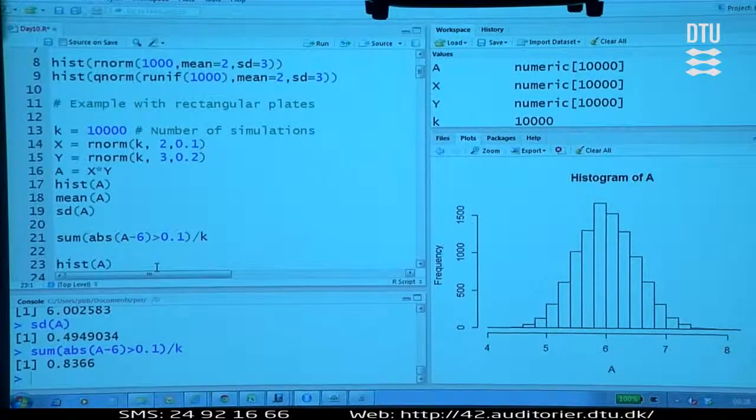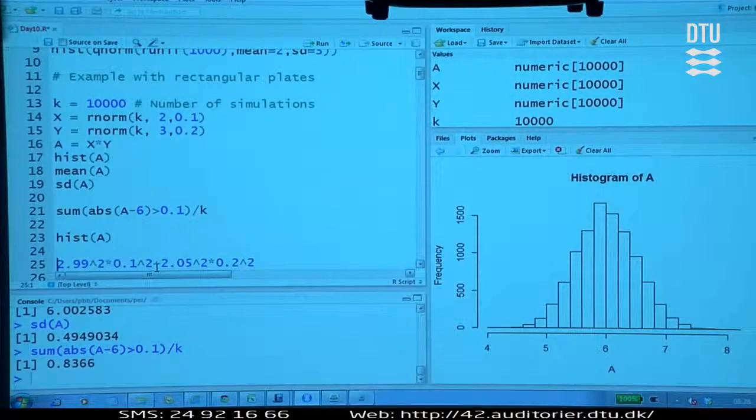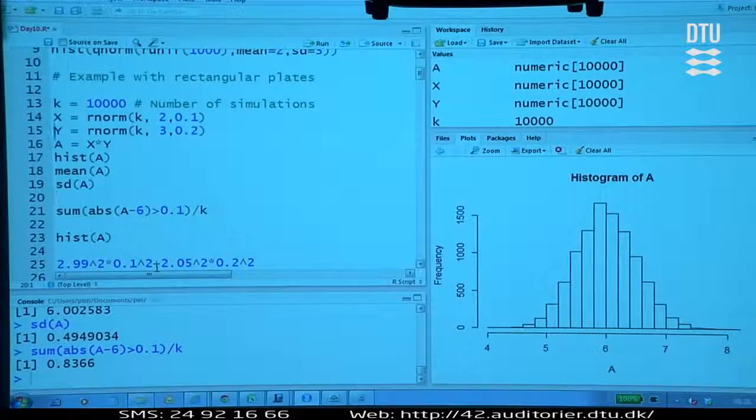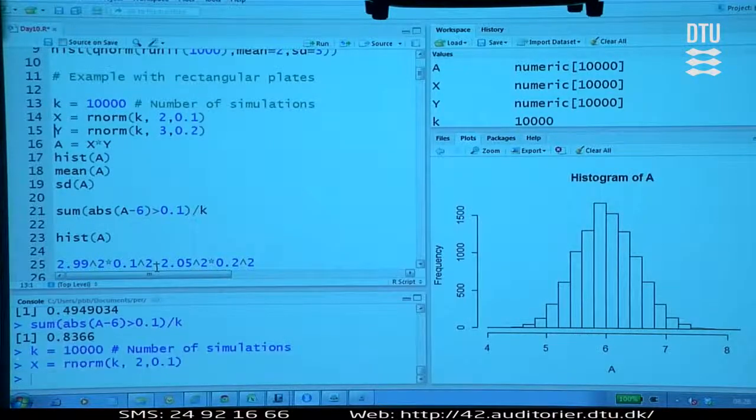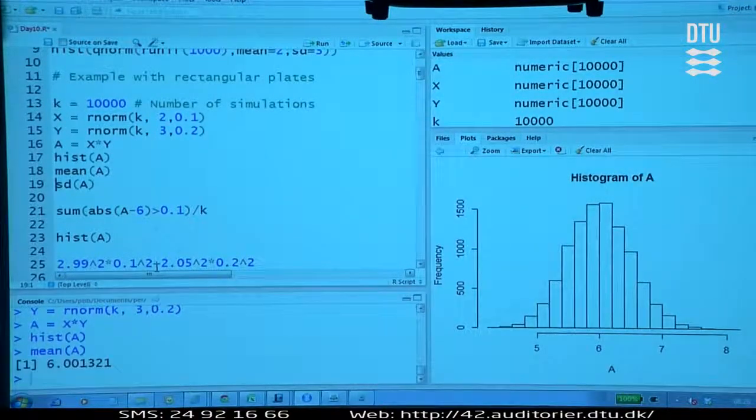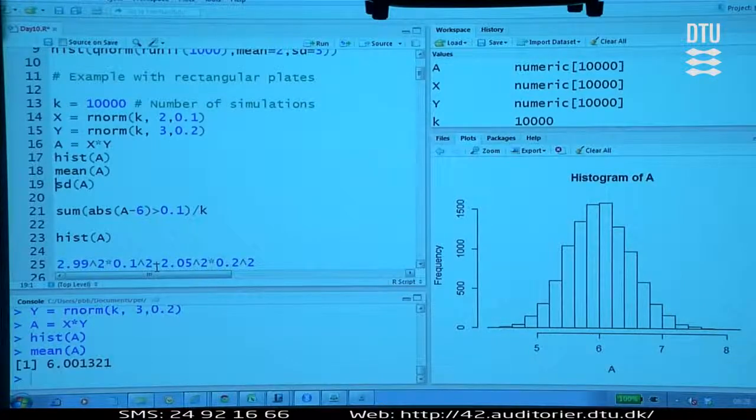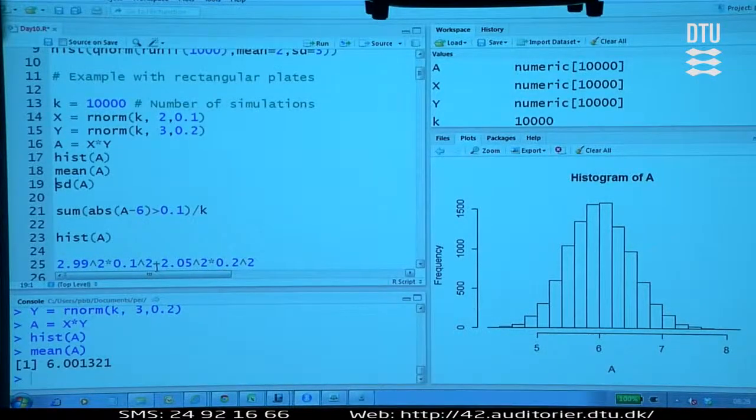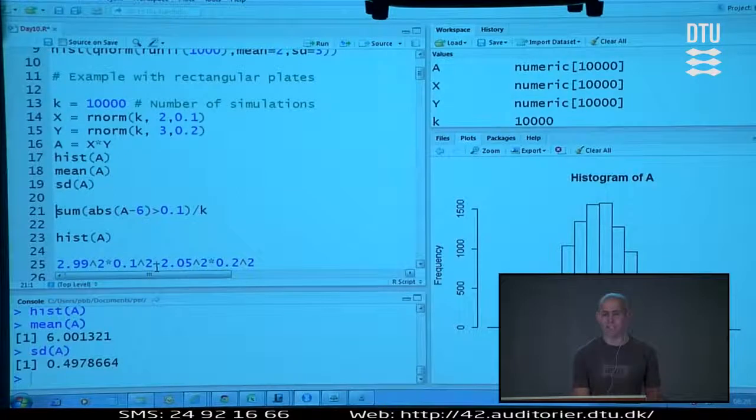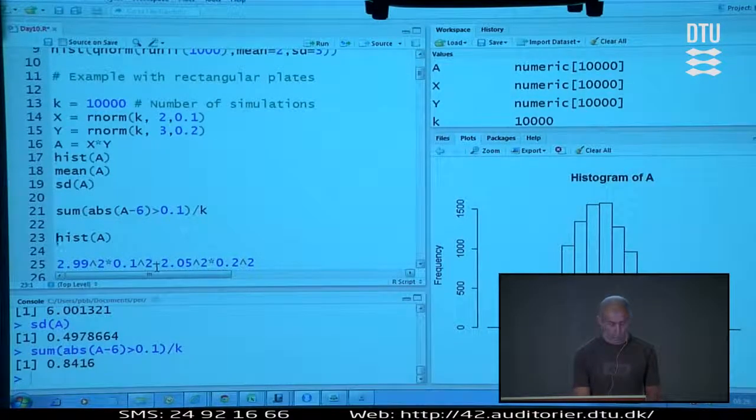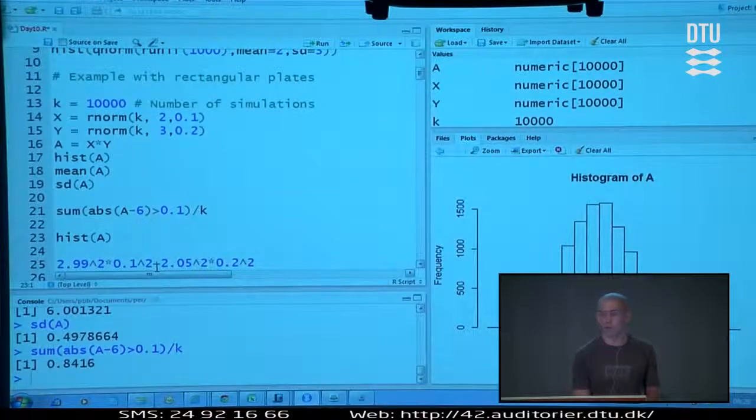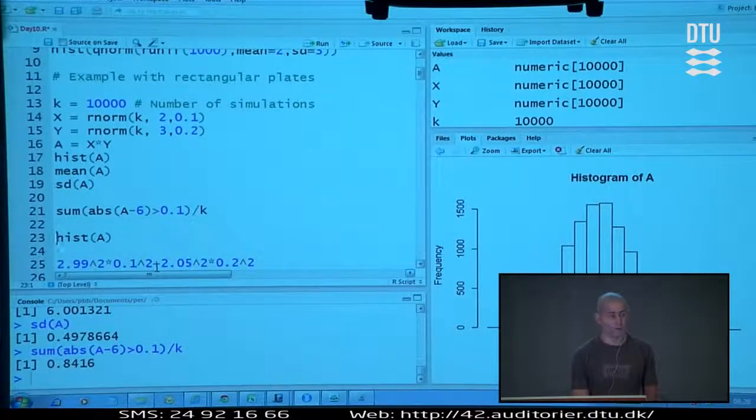Now, if I'm worried about the uncertainty here, and you maybe should, that's the challenge of the simulation. What if I do it again? Let's do it again. Now, the mean is not exactly the same as before. It's slightly different. And the standard deviation is slightly different from before. And also, this probability is now a bit above 84% before it was a bit below 84%. So, there is an uncertainty issue when we do simulation.